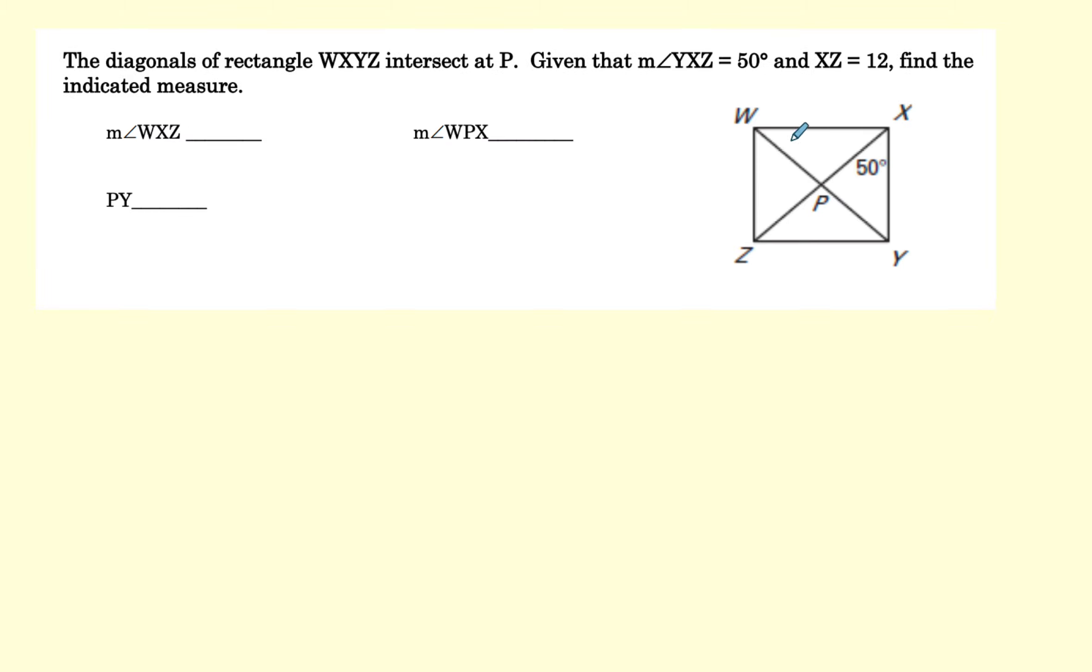This is a rectangle. And we know a rectangle, all the diagonals are congruent and they bisect each other. And we know we have a right angle right here. So angle WXZ, that will have to be 40 to make a 90 degree angle. So that's 40. And angle WPX, and this is an isosceles triangle, so this will be 40, 40 and 40. And this will be 100 to make 180. So that's 100.